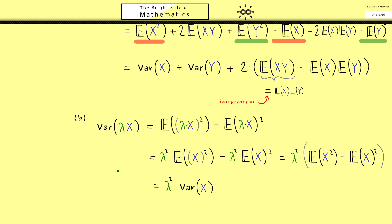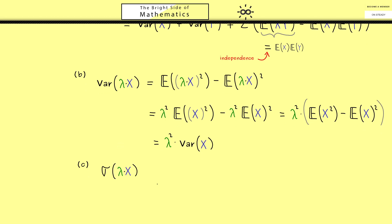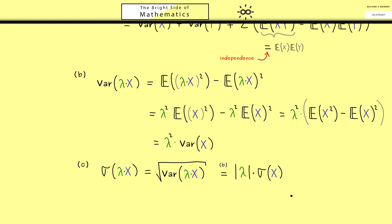From part B we can now derive part C. Essentially part C is the same thing but for the standard deviation instead of the variance. The only thing we have to do is take the square root of the variance. Using part B we get the square root of lambda squared, which is simply the absolute value of lambda, and the other factor is the square root of the variance of X, which is the standard deviation of X. With this the whole proof is finished. Please remember all these properties and formulas because you can use them in calculations, and indeed how to do that we will see in the next videos. I really hope to see you there — have a nice day.